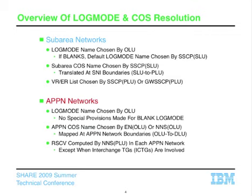After the class of service is selected, the route through the network is always chosen by the SSCP on the PLU side of the network, or by the gateway SSCP on the PLU side. They activate the virtual routes and explicit routes needed to send data across. So we pick and activate the virtual route from the PLU side of the network.